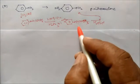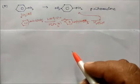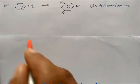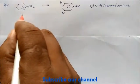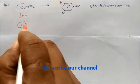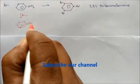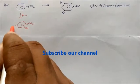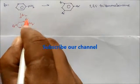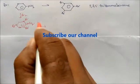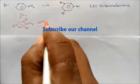Next is aniline to 1,3,5-tribromobenzene. Do bromination — bromine will be placed at three positions: ortho and para positions. You will get 2,4,6-tribromoaniline.